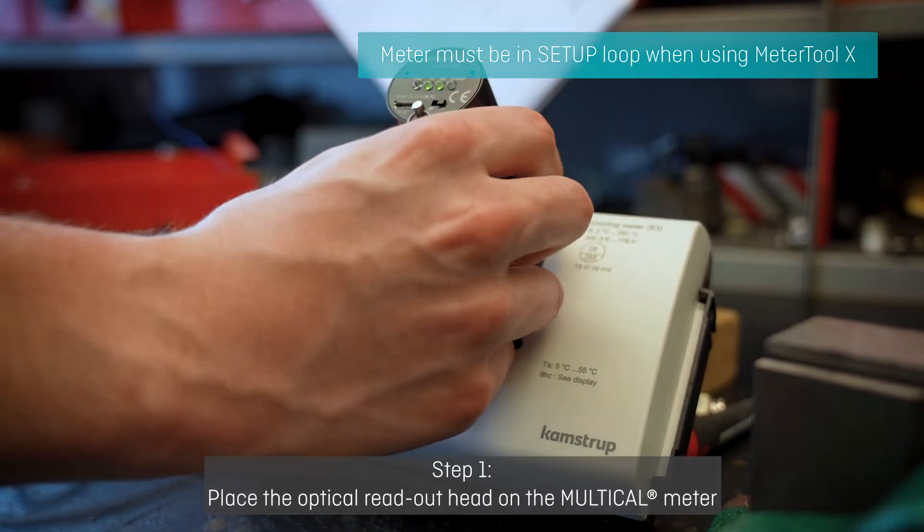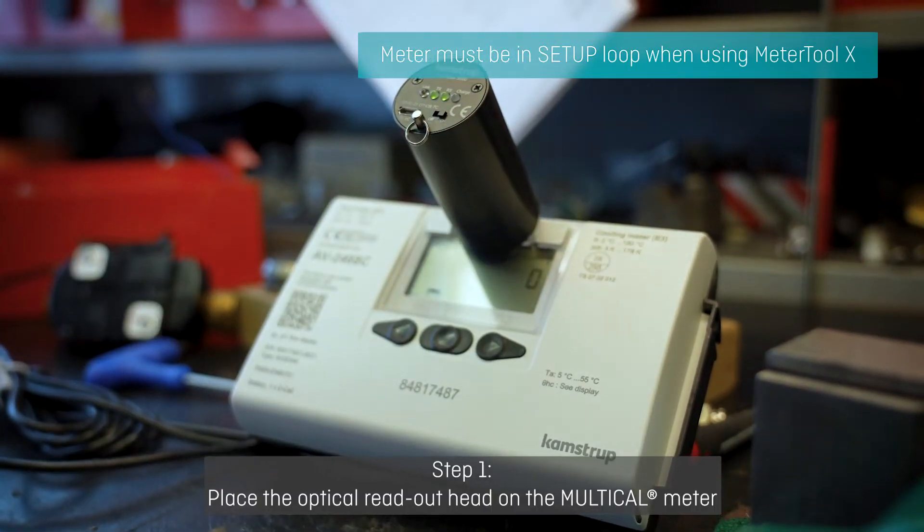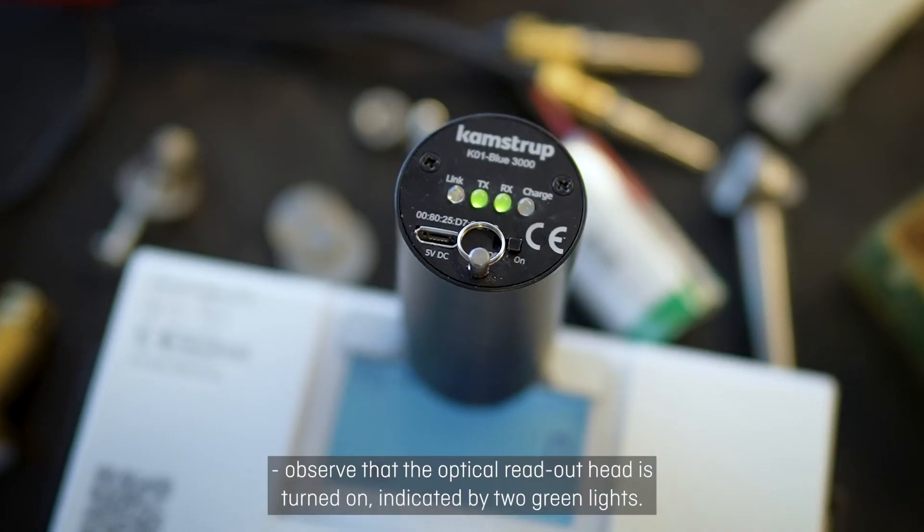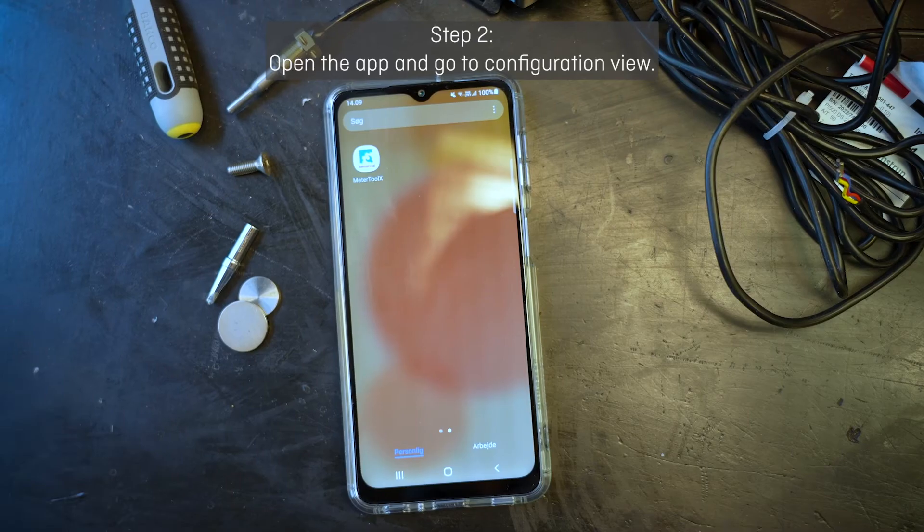Step 1. Place the optical reader head on the Multical Meter. Observe that the optical reader head is turned on, indicated by 2 green lights.